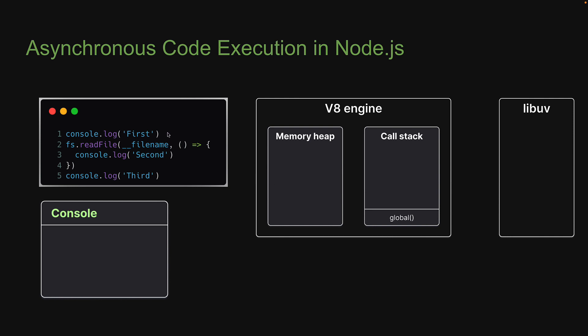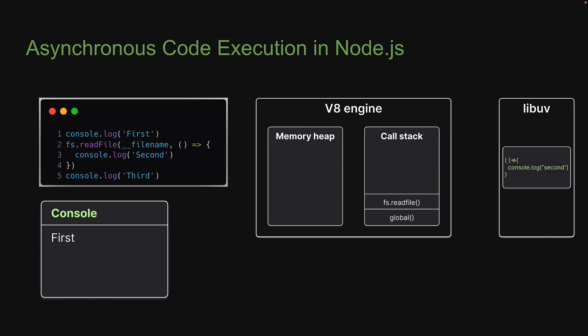Execution comes to line one. At one millisecond, console.log is pushed onto the stack. 'First' is logged to the console and the function is popped off the stack. Execution now moves on to line two. At two milliseconds, the readFile method gets pushed onto the stack. readFile is an async operation that is offloaded to libUV, so the callback function is handed over to libUV. JavaScript then simply pops off the readFile method from the call stack. In the background, libUV starts to read the file contents on a separate thread.